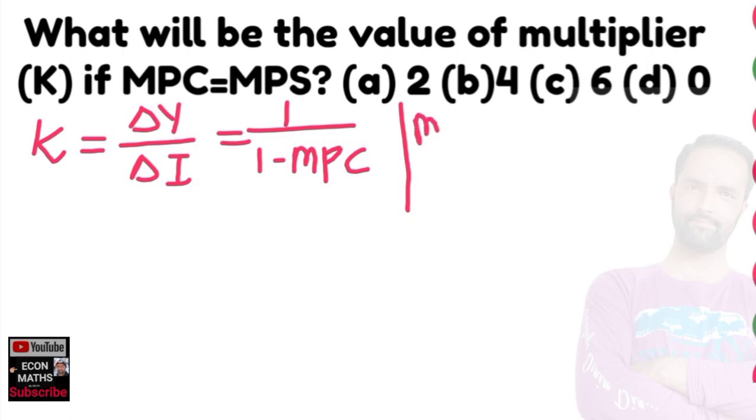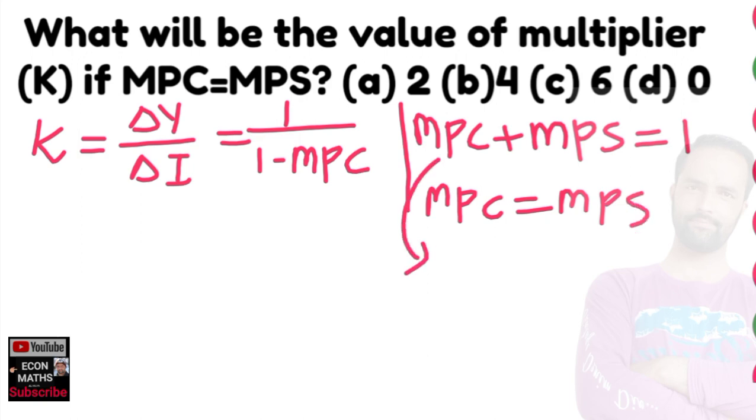We also know that MPC plus MPS is equal to 1. If MPC is equal to MPS, this identity can be rewritten. So in place of MPS we will write MPC.